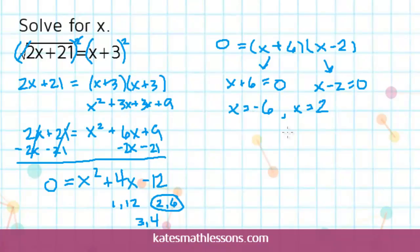Sometimes one of them will work, or two, or maybe none of them will work, so it's important to check both of them. When you check your answer, you always want to go back to the original equation before you did anything to it. The original equation was the square root of 2x plus 21 equals x plus 3.